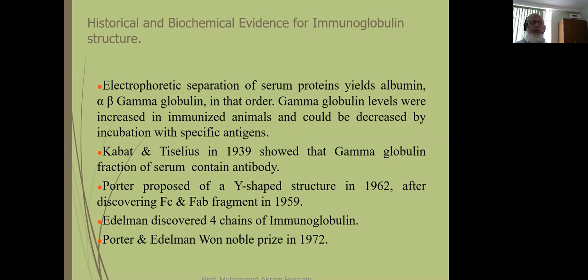Historic and biochemical evidence for immunoglobulin structure: when the serum of any person is electrophoretically separated, it goes into three fractions — alpha, beta, and gamma. The gamma-globulin levels are increased in immunized animals and could be decreased by incubation with a specific antigen. Cabot and Tiselius in 1939 showed that the gamma-globulin fraction contains antibody. Porter proposed a Y-shaped structure in 1962 after discovering the FAB fragment in 1959, and Edelman discovered the four-chain structure of immunoglobulin. Porter and Edelman won the Nobel Prize in 1972.